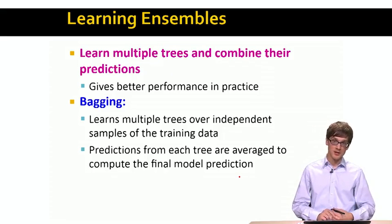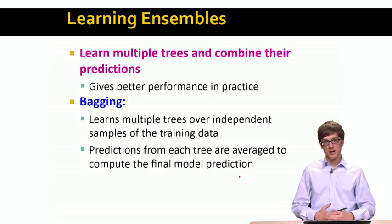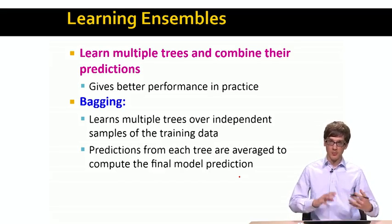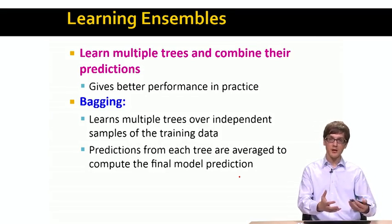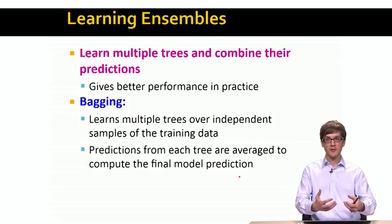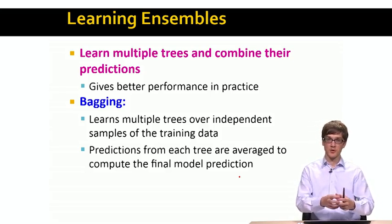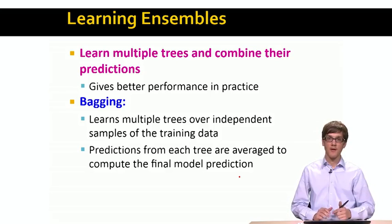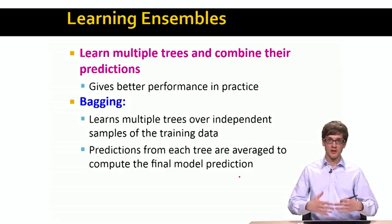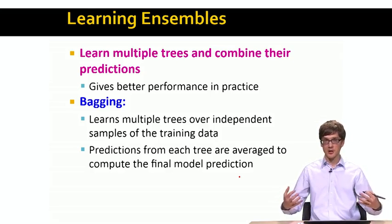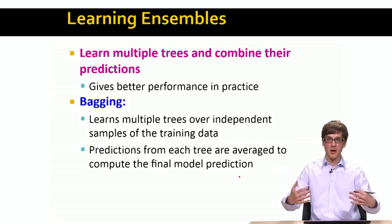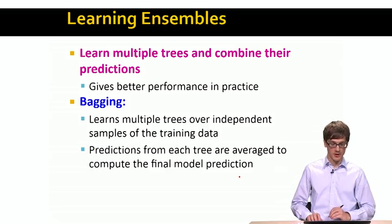Another thing that decision trees are very useful for is what is called learning ensembles. Many times it turns out that it is better to build multiple decision trees, let each of the individual decision trees create its own prediction, and then use these predictions as votes or average them together to make the final prediction. So this is what it means to learn an ensemble of decision trees — you take the individual predictions and aggregate them to make the final prediction.